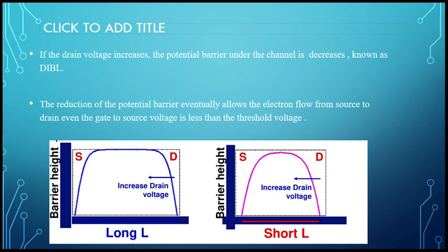The reduction of potential barrier eventually allows the electron flow from source to drain even when the gate-to-source voltage is less than the threshold voltage.